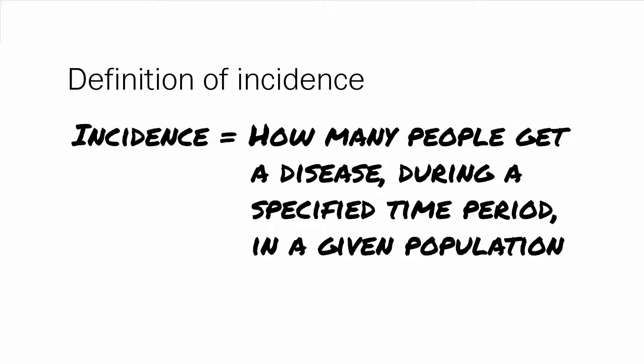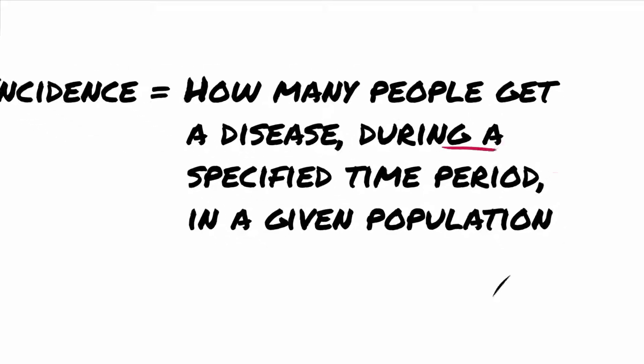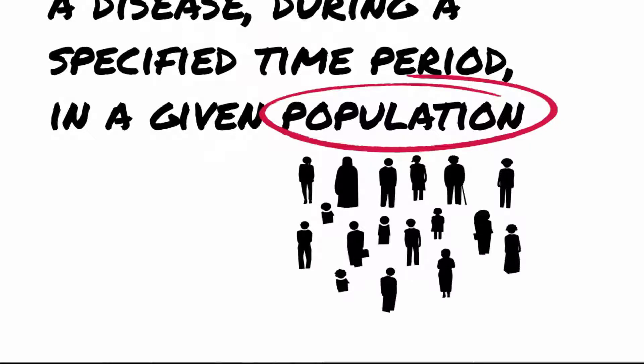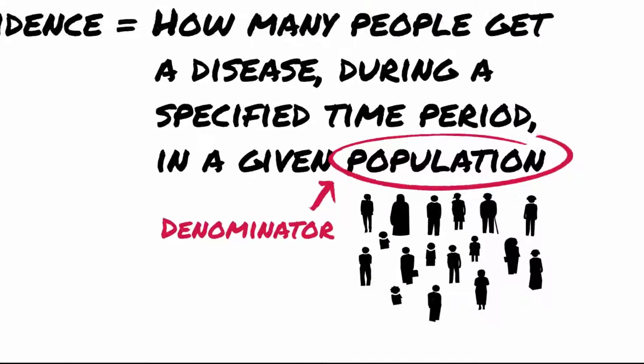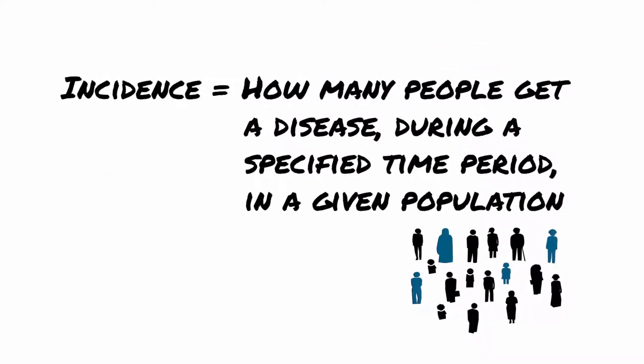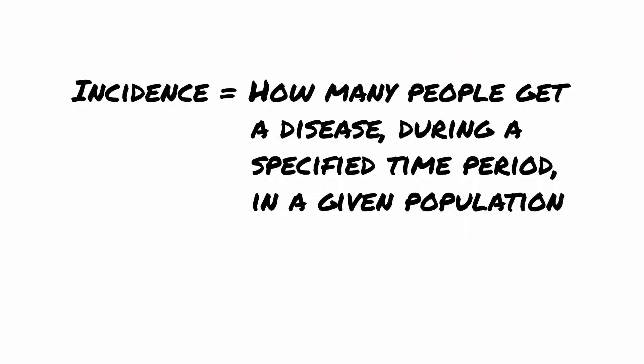To calculate incidence we need to know three numbers: one, the time period being studied; two, the population at risk during this time period — we call this the denominator; three, the number of new cases of the disease, known as the numerator. Prevalent cases — that is, those people who already have the disease at the start of the study — are excluded.